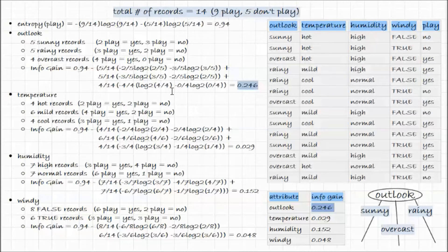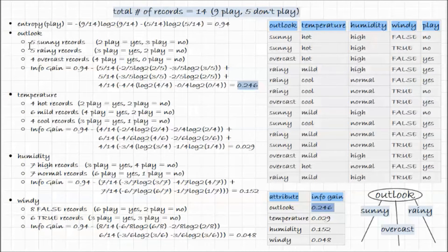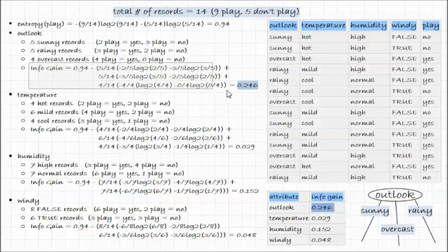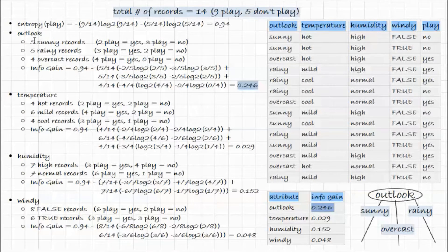For outlook, we have 5 sunny records — of those 2 are play=yes and 3 are play=no. We have 5 rainy records — of those 3 are play=yes and 2 are play=no. And 4 overcast records where all of them are play=yes. We calculate the information gain by taking the original entropy and subtracting contributions from each subset. For the sunny records, that's minus 2/5 * log base 2 of 2/5, minus 3/5 * log base 2 of 3/5.